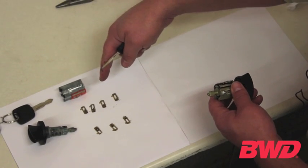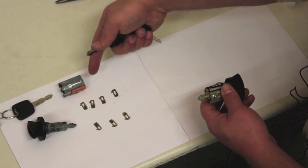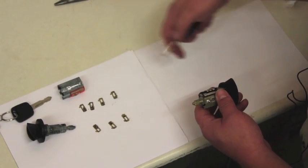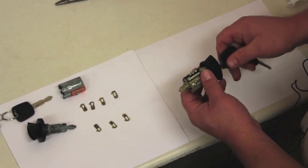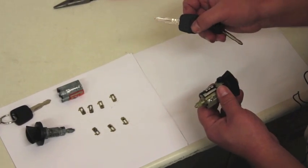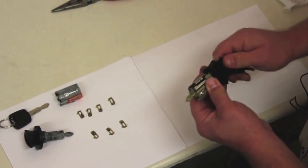You can see we've already broken down the previously used lock cylinder, removed all the coding slugs out of it, and we're going to break down the new lock cylinder. It comes with a key coded to it, ready to work already.